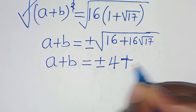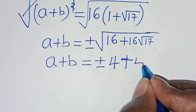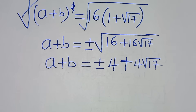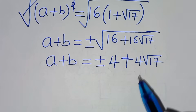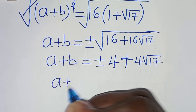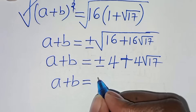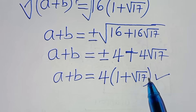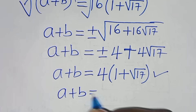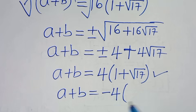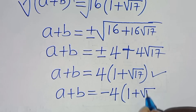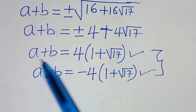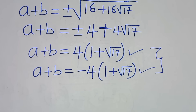So we have two values of a plus b: a plus b equals 4 times (1 plus square root of 17) — this is the first solution. The second solution is a plus b equals negative 4 times (1 plus square root of 17). These are the two sets of solutions for a plus b in this algebra problem.